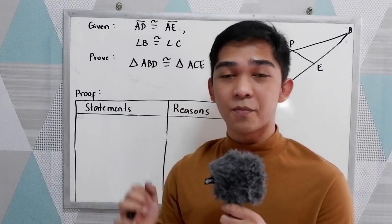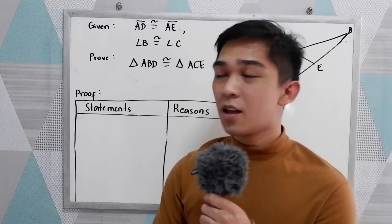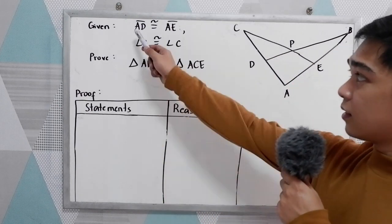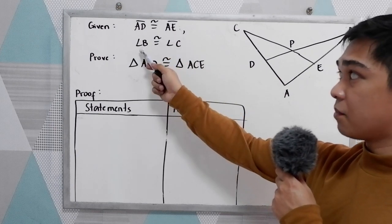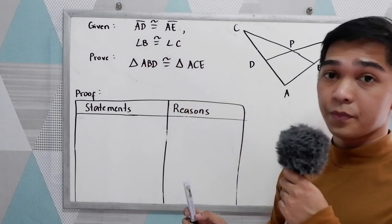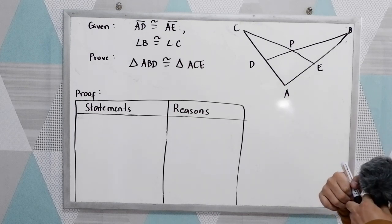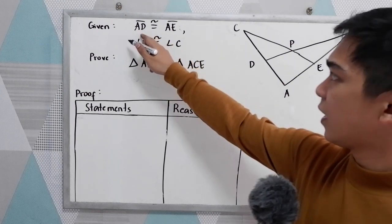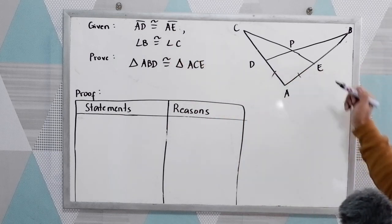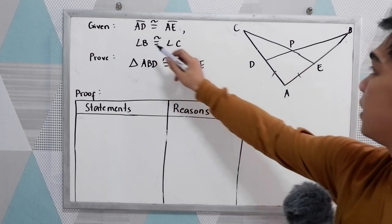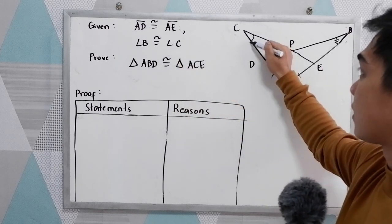Let's have this third example. Given AD is congruent to AE, and angle B is congruent to angle C, and this illustration. Let us first identify that AD is congruent to AE, and angle B is congruent to angle C.